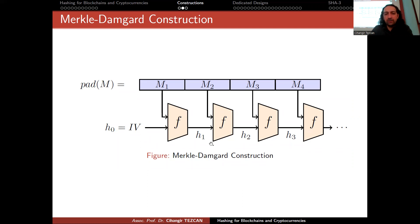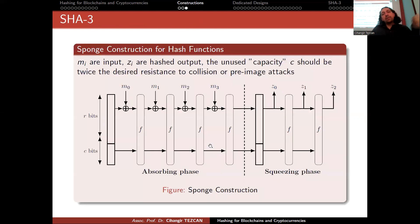Merkle-Damgård construction is used in MD4, MD5, SHA-1, SHA-2, RIPEMD, and so on. All of the previous hash functions most of the time use this construction, but with SHA-3 we became familiar with sponge functions.